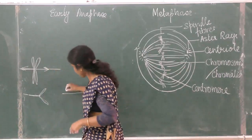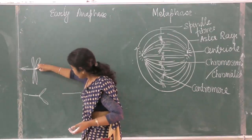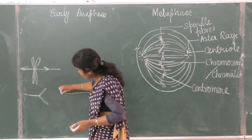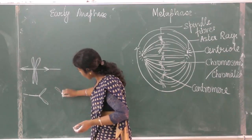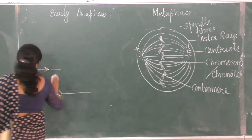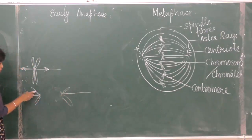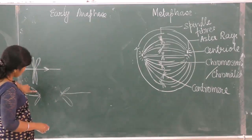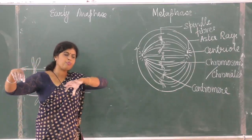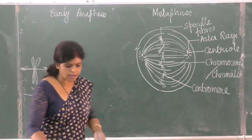Children tend to draw this in a wrong way. The centromere is pulled first, and the chromatid follows. If you draw the structure as if the chromatids are being pulled first, that is wrong — whichever part is pulled comes first, and the rest follows. So the centromere must come first.